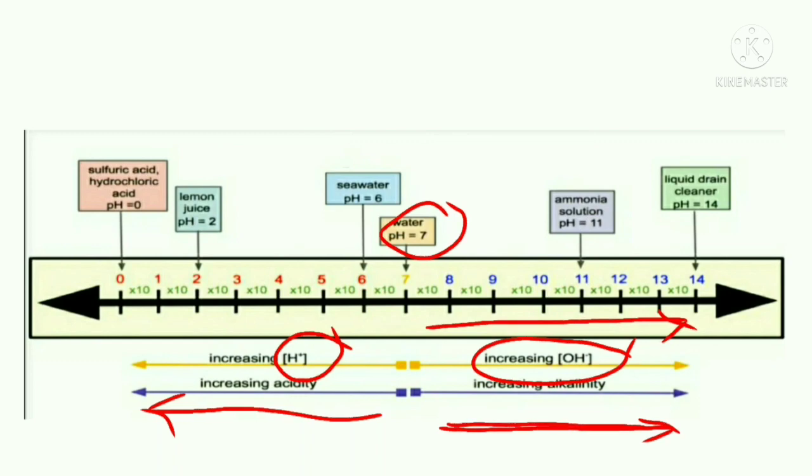Our water has pH 7, that is it is neutral. Sea water has pH 6, that means sea water is acidic. Lemon juice has pH 2, that means it is highly acidic. Sulfuric acid and hydrochloric acid has pH 0, that means it has highest acidity.